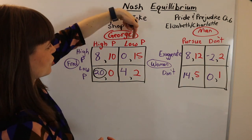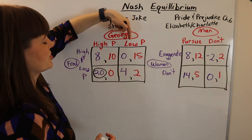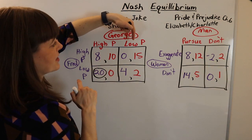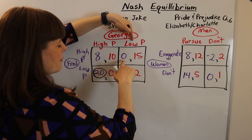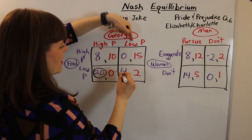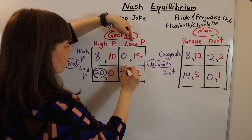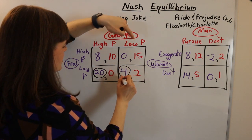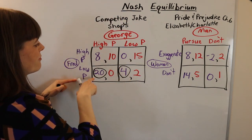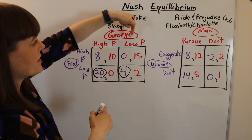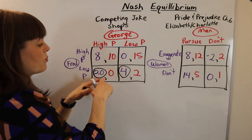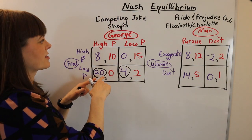Then Fred checks George's other strategy. He says: if George, my competitor, sets his price low, do I prefer to have gotten the zero or the four? He prefers the four. So we can see that setting a low price is a dominant strategy for Fred — meaning no matter what George chooses, Fred will have wished he had set his price low.